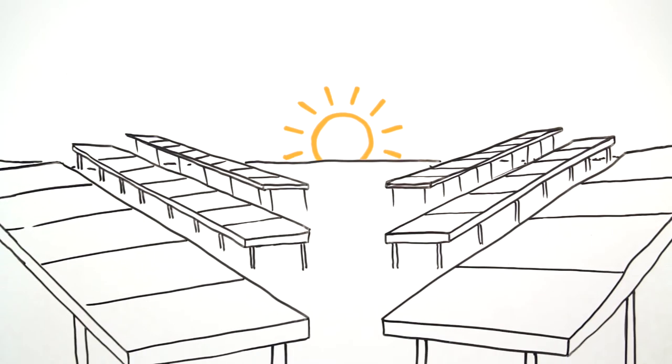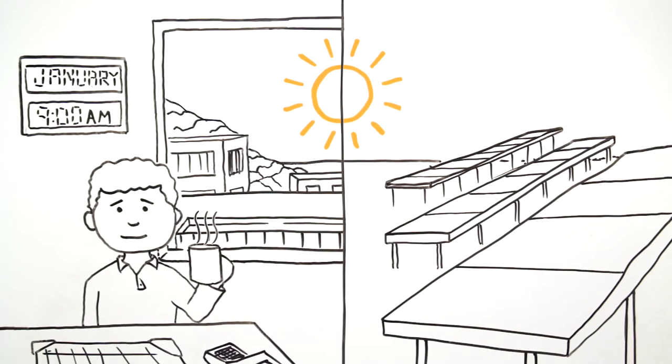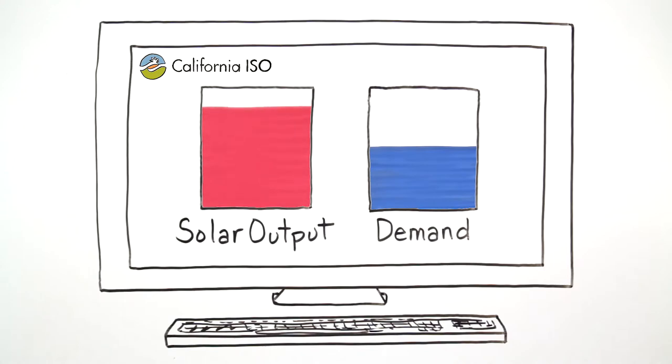Adding new solar plants has created a surplus of power during certain times when demand is low. During times of surplus, our automatic systems reduce or turn off solar output until supply is balanced with demand.